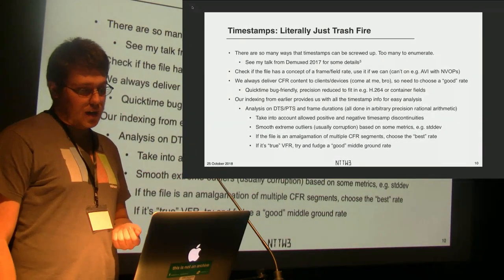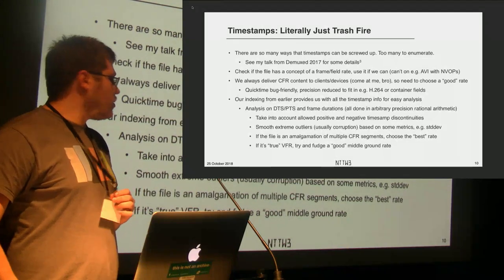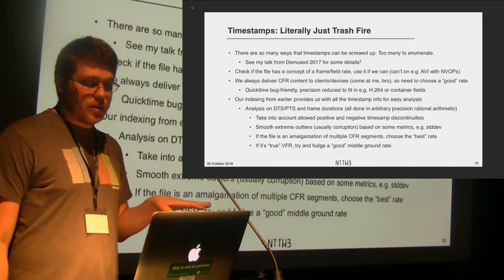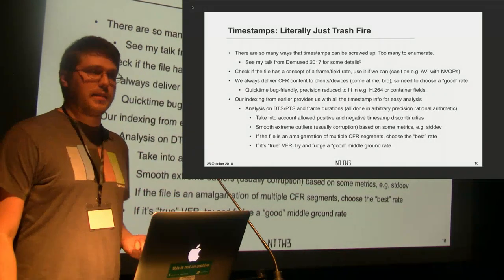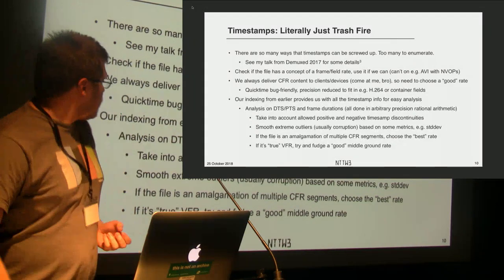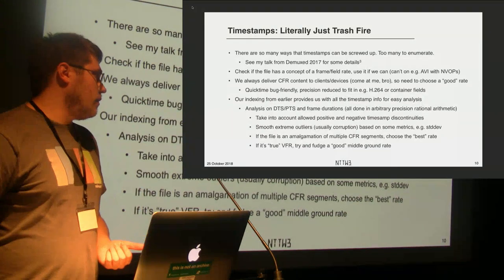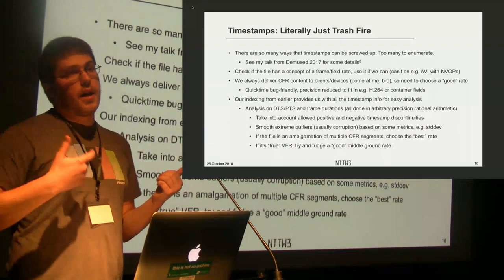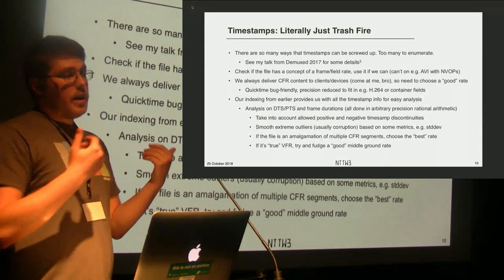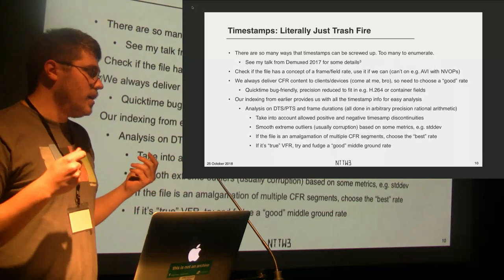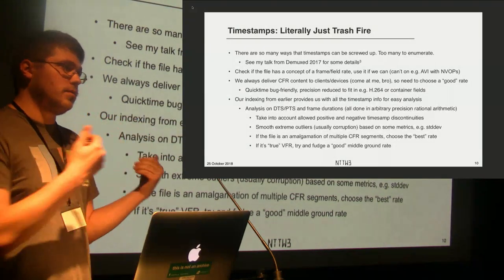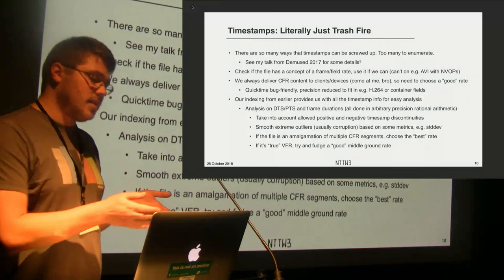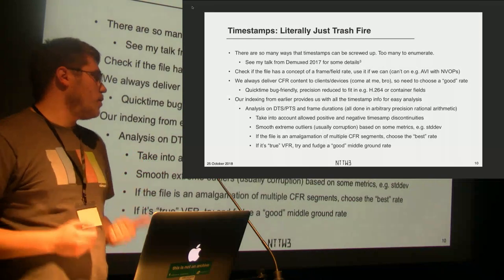Before trying to fudge a good frame rate, check if the file is a mix of known good frame rates. For example, if you have film content at drop-frame 24 with 60i credits, you have to make a bad choice: are you okay with the credits being ruined, or are you okay with jittered content throughout the rest of the file? You have to throw some heuristics at that — if a certain percentage of the file is one rate, pick that frame rate from your known set.